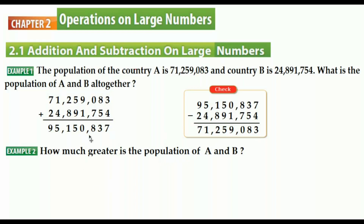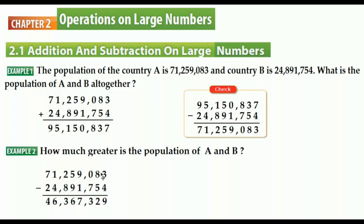We write the bigger number first: 71 million 259 thousand 83, then subtract 24 million 891 thousand 754. Starting from the ones digit: 3 minus 4 — we cannot, so we borrow from the next digit, making it 13. 13 minus 4 equals 9. Continuing this process, we get the answer: 46 million 367 thousand 329.